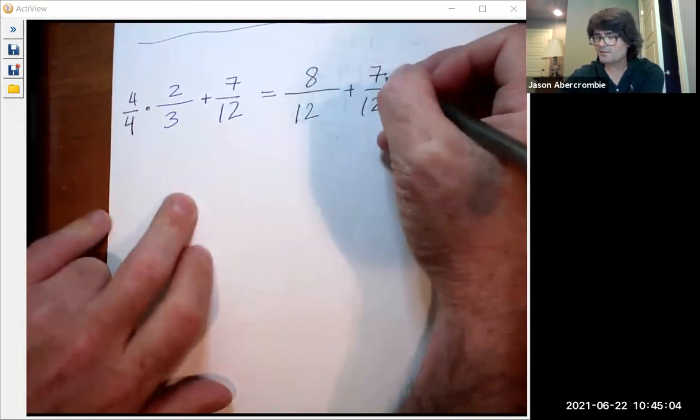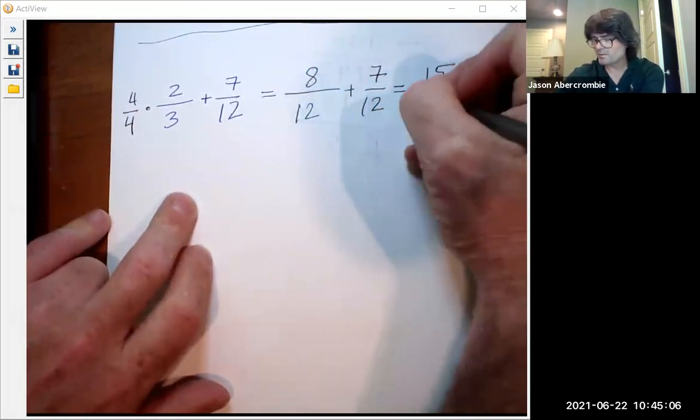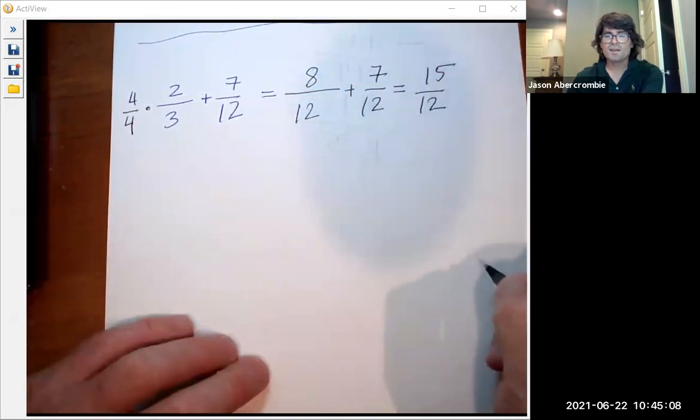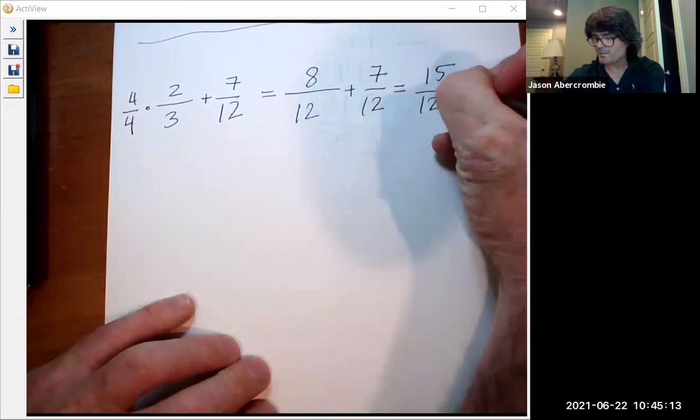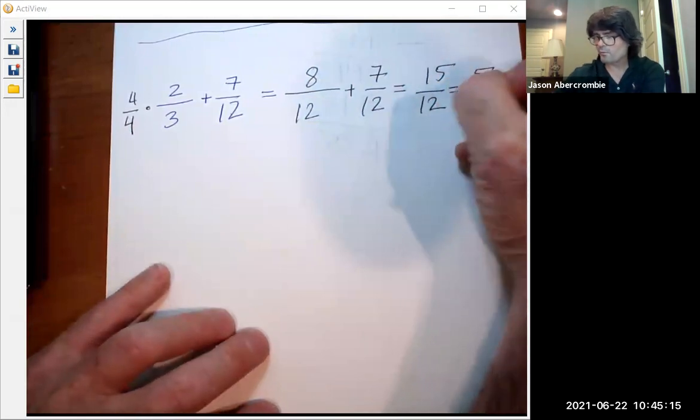And then plus the seven over 12 stays the same. And I get eight plus seven, that's 15 over 12. And that actually reduces by three. So this is the same as five-fourths.